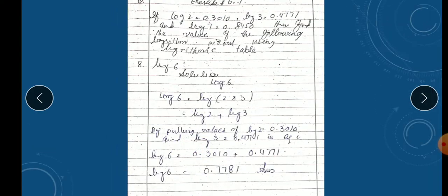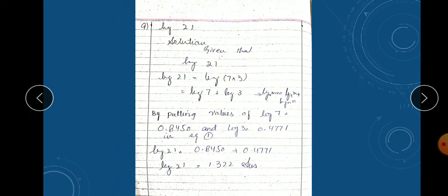Question number nine: log21. What is the factor of twenty-one? Seven and three: seven times three is twenty-one. We separated it. Log7 value is given, log3 value is given, so we put them. We have log21 equals 1.322.